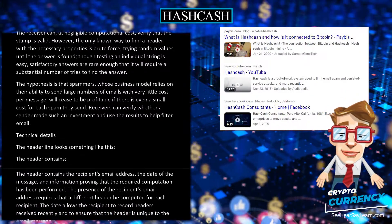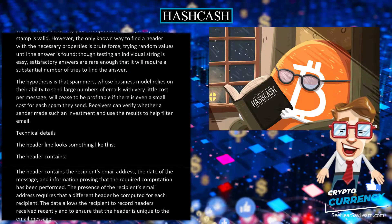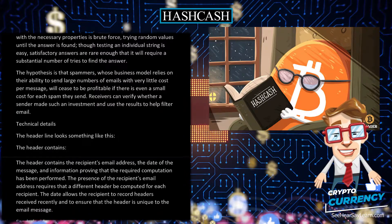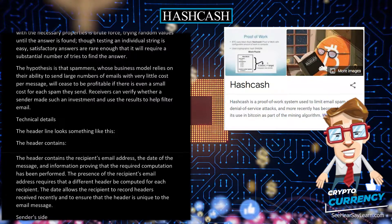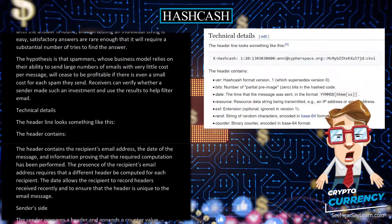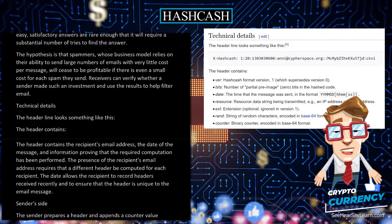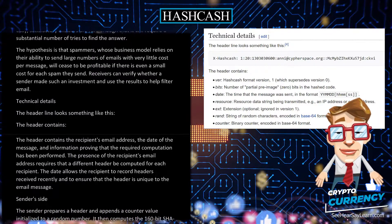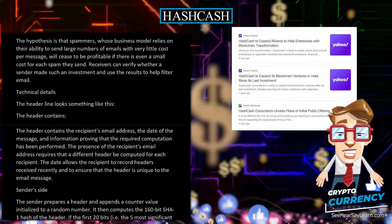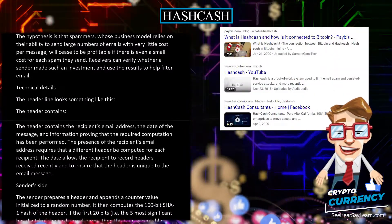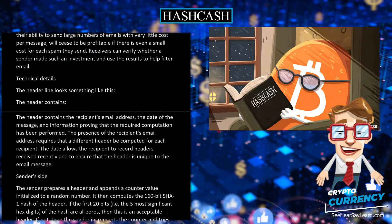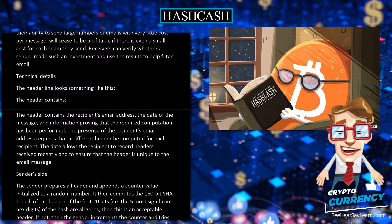Technical Details. The header contains the recipient's email address, the date of the message, and information proving that the required computation has been performed. The presence of the recipient's email address requires that a different header be computed for each recipient. The date allows the recipient to record headers and to ensure that the header is unique to the email message.